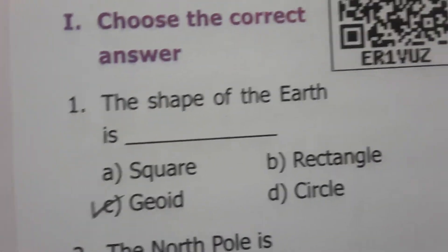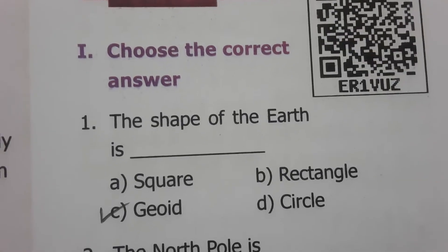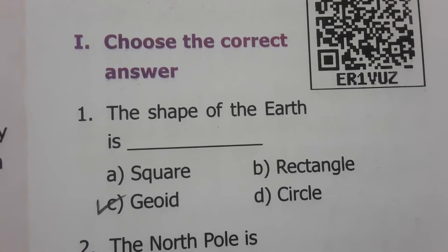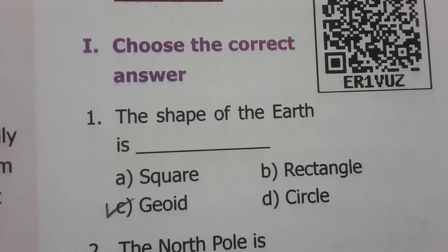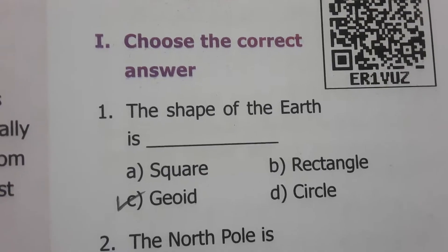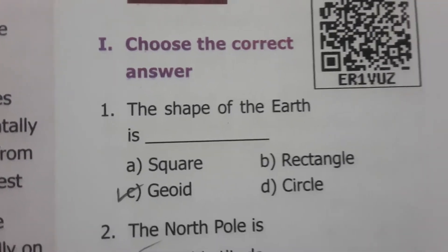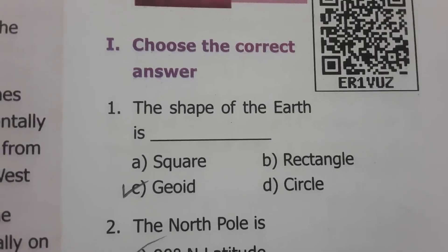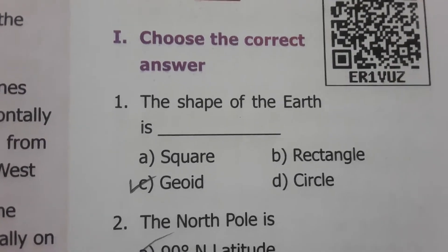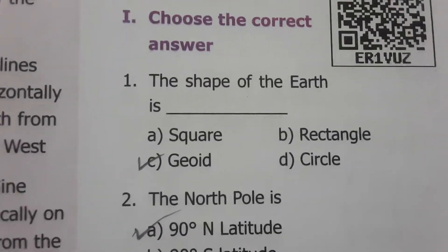In the book-back evaluations, choose the correct answer. The shape of the Earth is a geoid shape. Generally we study various shapes in mathematics and physical science — square, triangle, rectangle, cuboid — but the geoid shape is a very unique shape that exactly resembles the shape of the Earth. So 'geoid' is the answer.